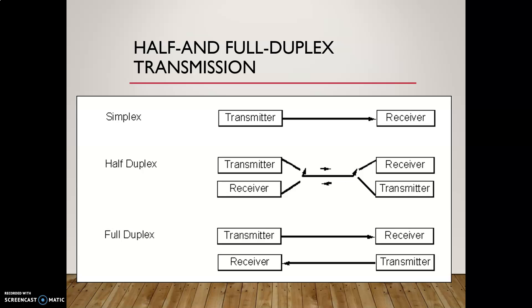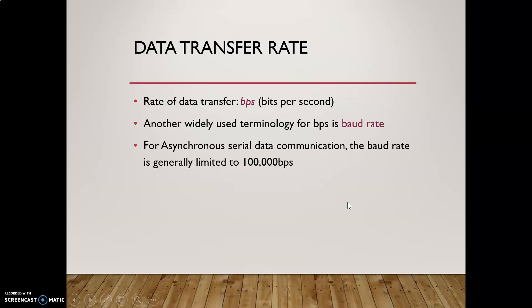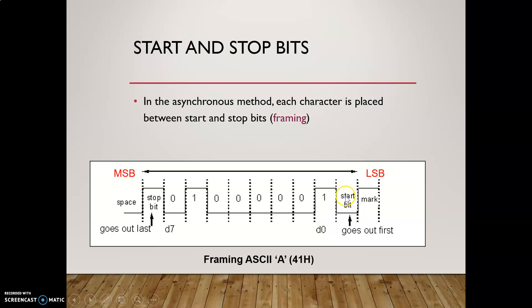Next is start and stop bits. We have discussed synchronous and asynchronous methods of serial communication. In the synchronous method, data is packed into blocks and those blocks are transmitted. In the asynchronous method, one byte of data is transmitted at a time. The method used to transmit this one byte of data is called framing of the data. So framing is done using a start bit and a stop bit.